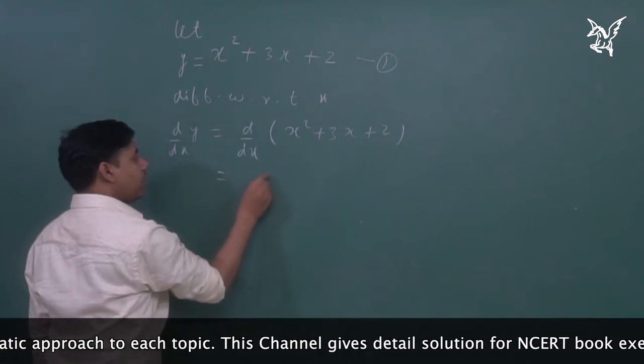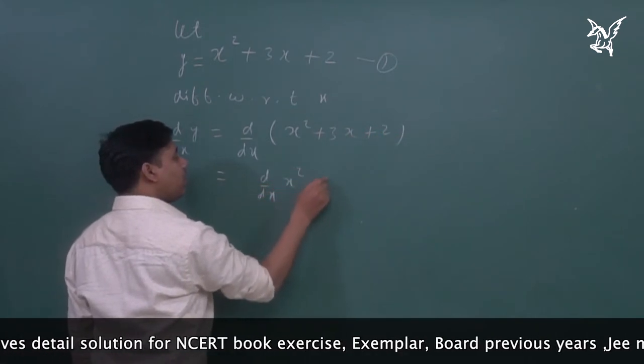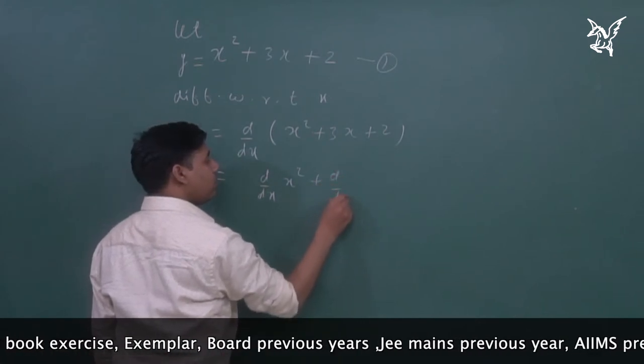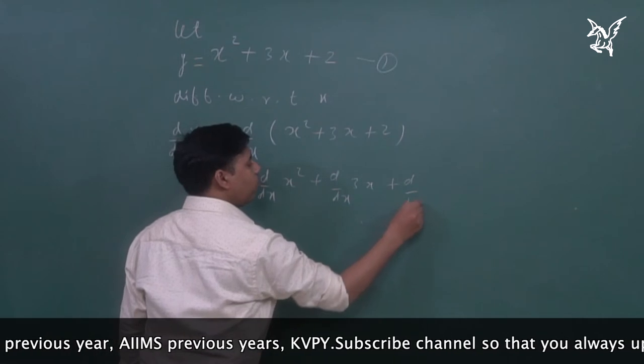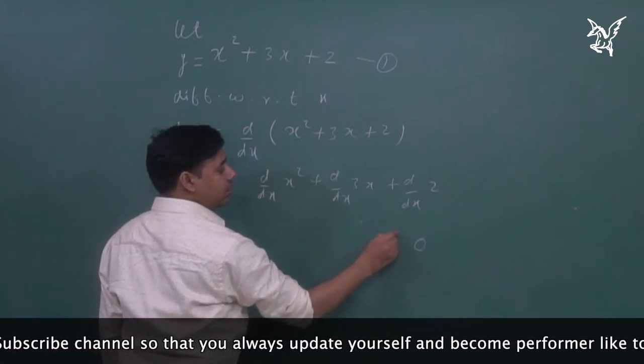So, what will happen? d by dx of x squared plus d by dx of 3x plus d by dx of 2. Two is a constant quantity, differentiation zero.